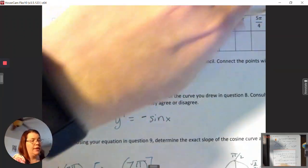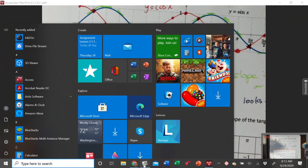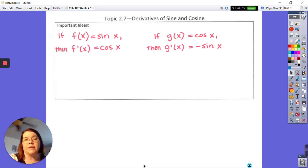The upshot is that the following things are true: If f of x equals sine of x, then f prime of x is cosine of x. If g of x equals cosine of x, then g prime is negative sine x. Those are the rules. Not too bad, right? That's not too bad. Seems really straightforward. Pause the screen and get it done.